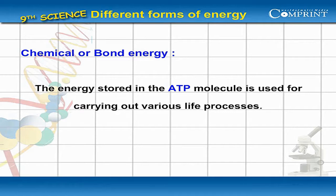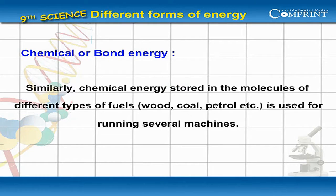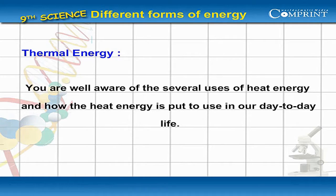The energy stored in the ATP molecule is used for carrying out various life processes. Similarly, chemical energy stored in the molecules of different types of fuels like wood, coal, petrol, etc., is used for running several machines.